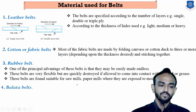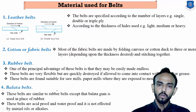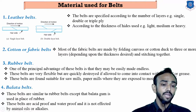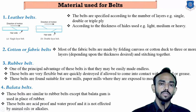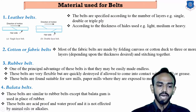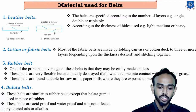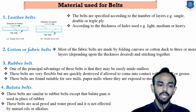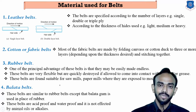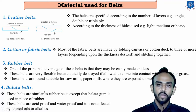The fourth type is the balata belt, which is similar to a rubber belt but uses balata gum applied on leather. It can be used in place of rubber belts. Balata belts are acid-proof and waterproof — moisture has no effect on them. They are used where rubber belts are not suitable, since moisture highly affects rubber belts.